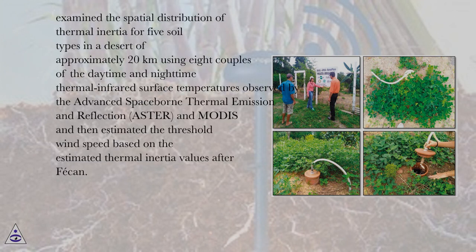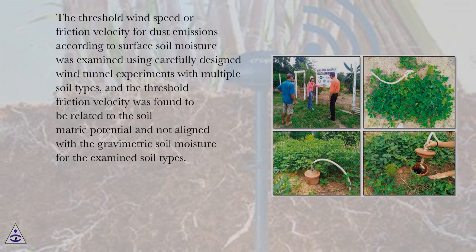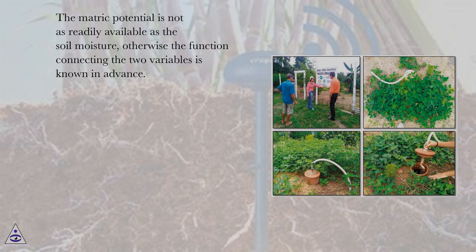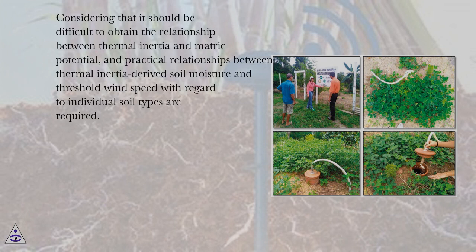Scheidt et al. examined the spatial distribution of thermal inertia for five soil types in a desert of approximately 20 km using eight pairs of daytime and nighttime thermal infrared surface temperatures observed by ASTER and MODIS, and then estimated the threshold wind speed based on the estimated thermal inertia values after FECAN. The threshold friction velocity for dust emissions according to surface soil moisture was found to be related to the soil matrix potential and not aligned with the gravimetric soil moisture for the examined soil types. The matrix potential is not as readily available as soil moisture, unless the function connecting the two variables is known in advance.